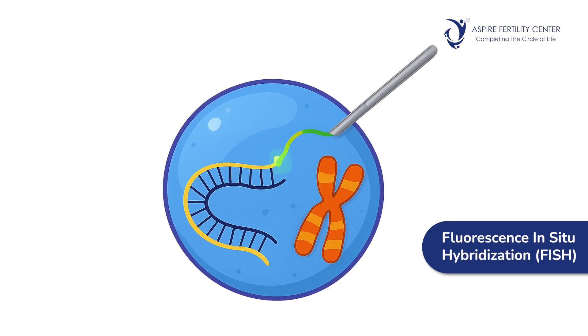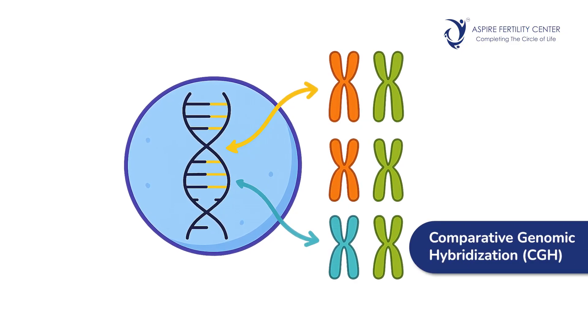It started off with a test called FISH, about 15 years ago — fluorescent in-situ hybridization. This was a genetic test wherein only 5 chromosomes were tested in the cells to know if they are normal. But we now know that there are 23 pairs of chromosomes, and testing all chromosomes is extremely important for good results. After FISH came CGH — comparative genomic hybridization — and also SNP arrays. These tests also helped in testing the embryo for genetic information, but there were disadvantages; sometimes results took longer, and though CGH gave reports within two days, it was not completely informative.